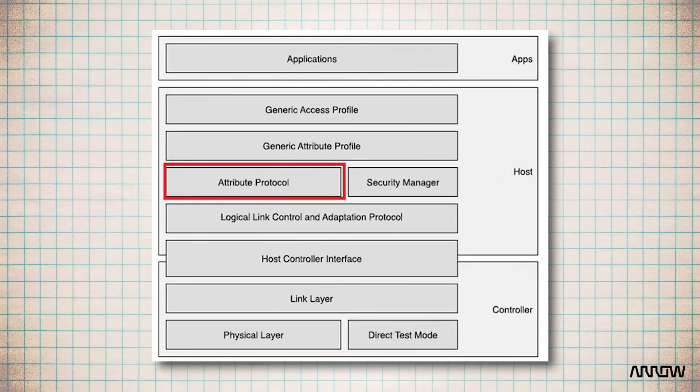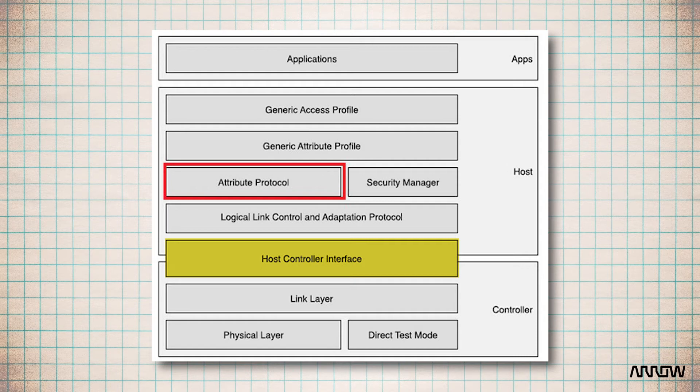When Bluetooth was defined, the architecture could be a two-chip solution, host and controller. The HCI or host controller interface is the interface between these two components. The HCI has two main functions. It sends commands to the controller and receives events back. And it sends and receives data from a peer device.